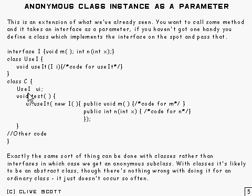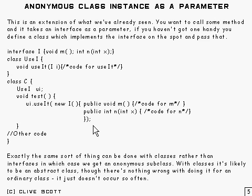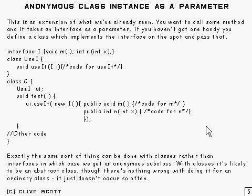The class has a method useIt which requires a parameter of that interface type to be passed in, with some code that uses it. Here we've made a variable of type UseIt called ui, and in this test we say ui.useIt — now it's going to require something of that type to be passed in. So what we do is make it on the spot: new I, and there we go, we've got something which implements it. Close the brackets — it looks a bit odd but you get used to it. You can do exactly the same with classes; if it needed a class you'd create new for that class and end up with an anonymous subclass. With classes it's likely to be an abstract class, though there's nothing wrong with an ordinary class — it just doesn't happen quite so often. This is used all over the place in Swing, so you have to get used to it.